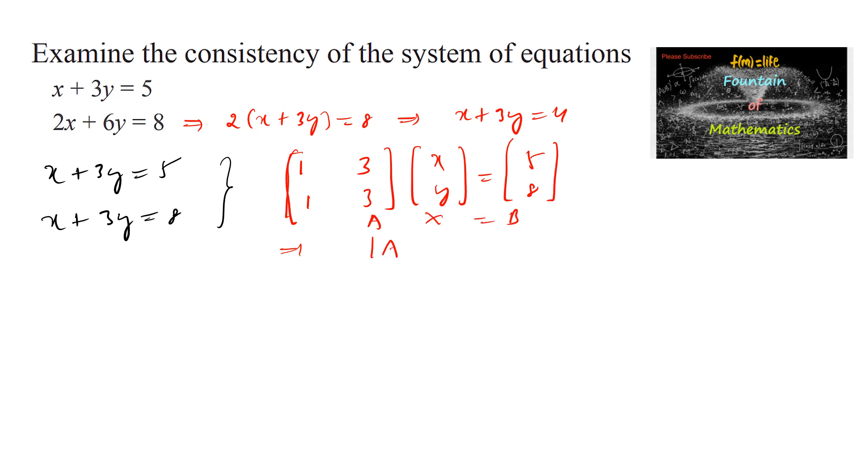We know that if determinant A equals 0, there are two cases: adjoint of A into b. If it equals 0, infinite solutions, that is consistent. And if it is not equal to 0, we can say that it's inconsistent, no solution.